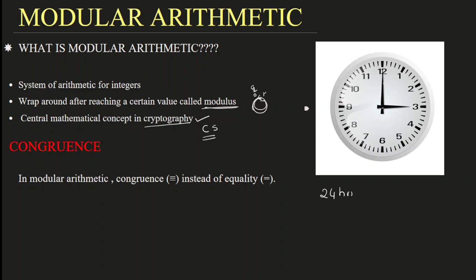The clock goes 1, 2, 3, 4, 5, 6 ... 12. When it comes to 12 — that is 12 hours. After reaching 12, when you reach 12 again, what we usually call this is 1. After reaching 1 full circle — reaching 12 — when it comes to 1, it's 1 pm.